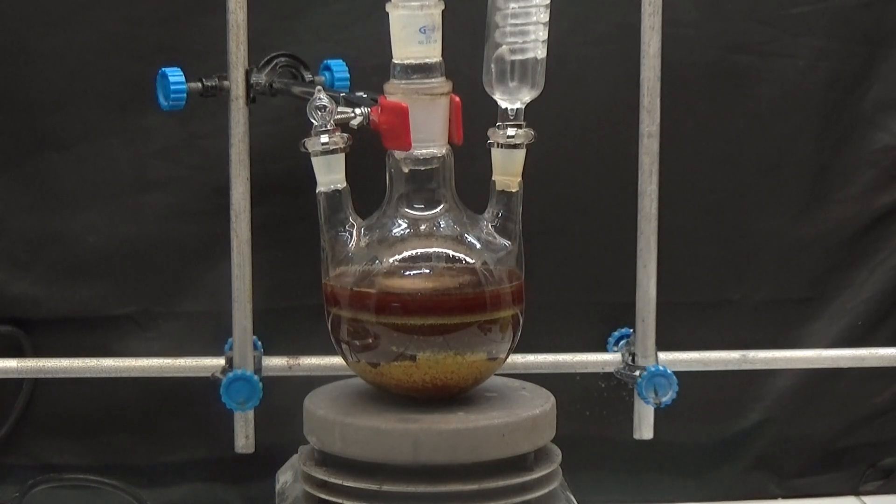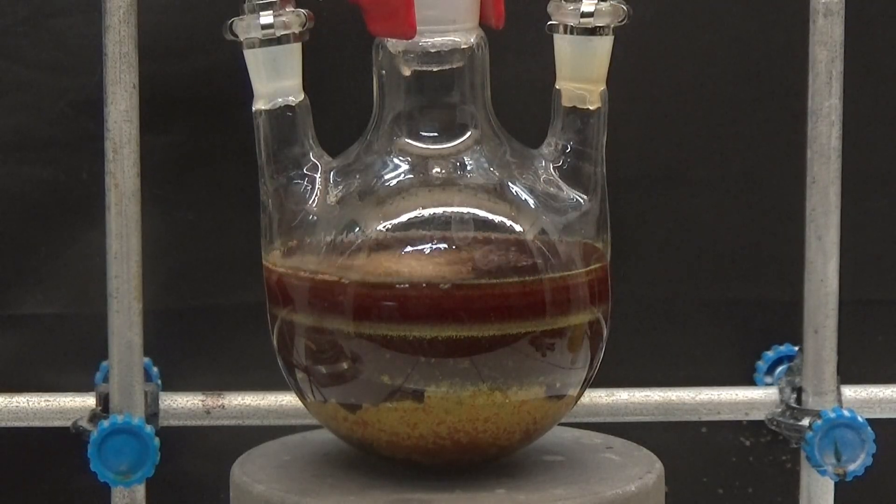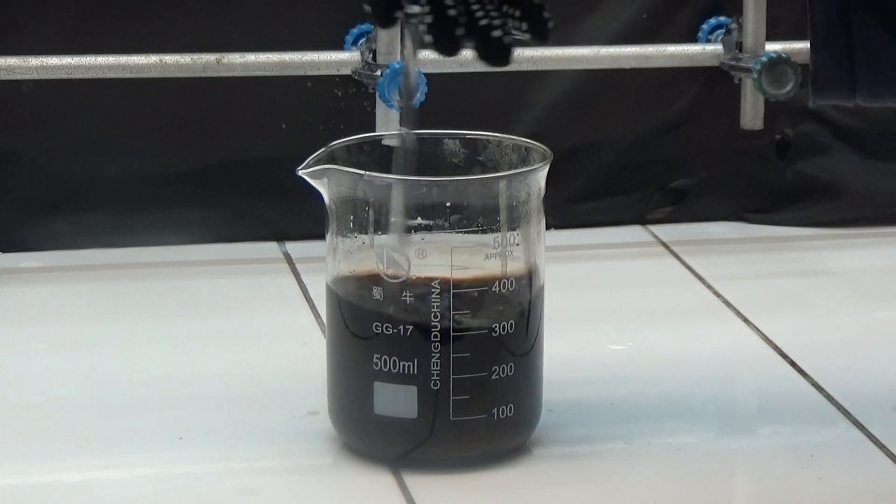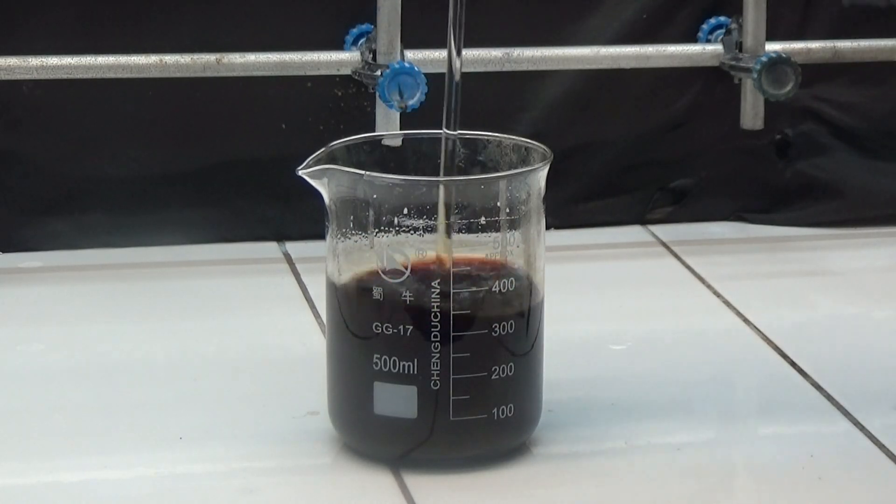Bring to a boil with reflux and pour it, still hot, into a 500ml beaker. We allowed it to cool in the refrigerator overnight to crystallize.